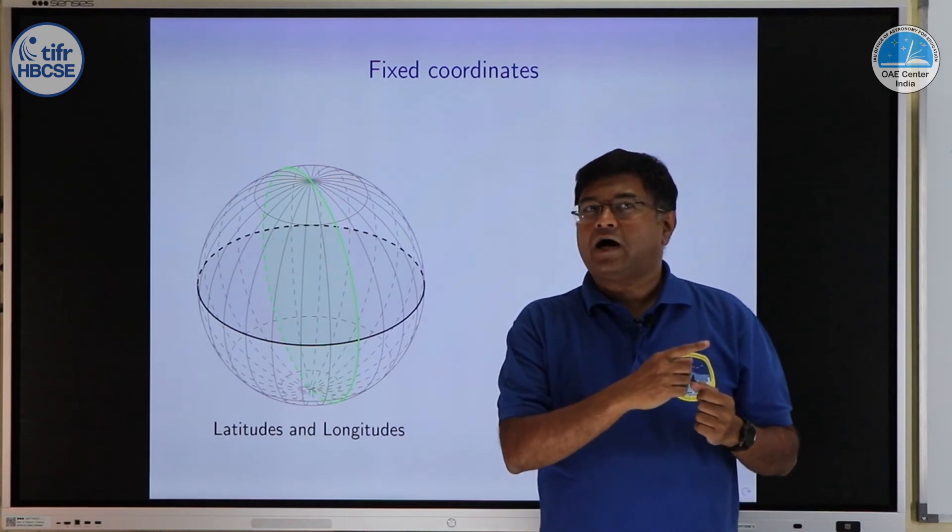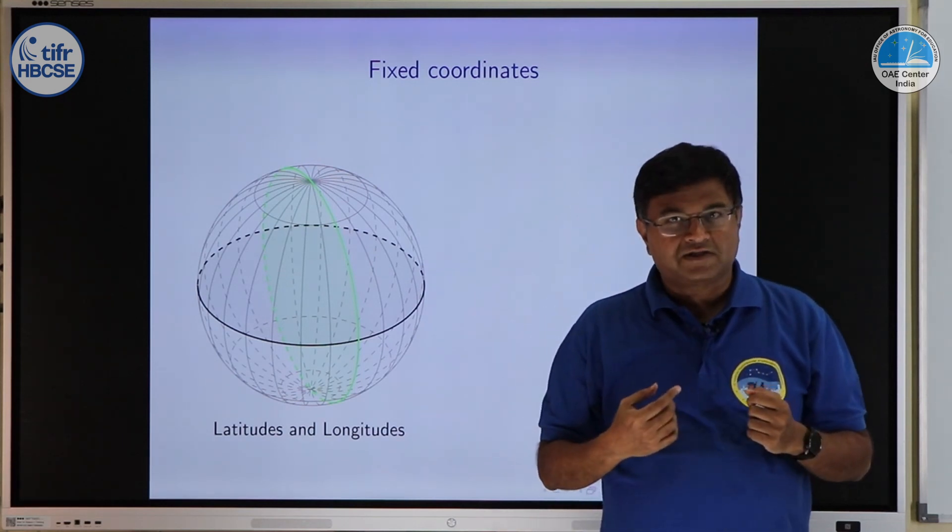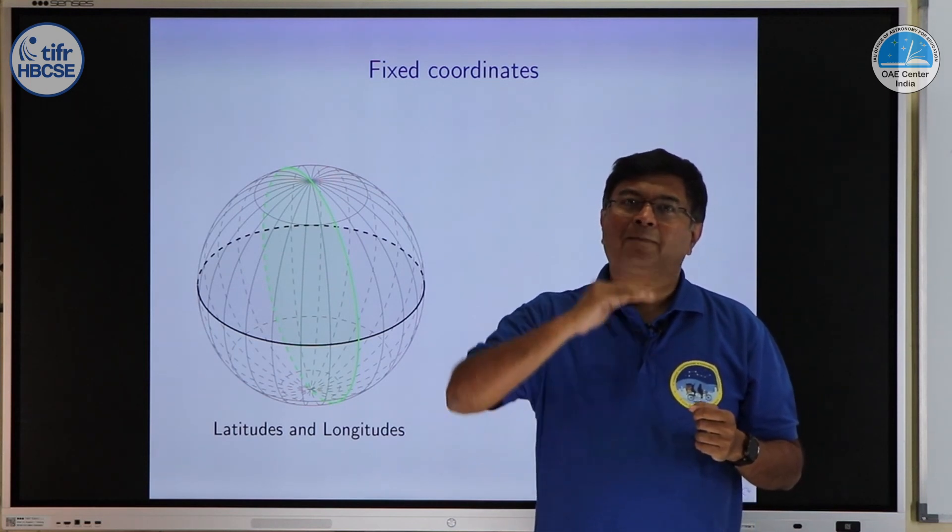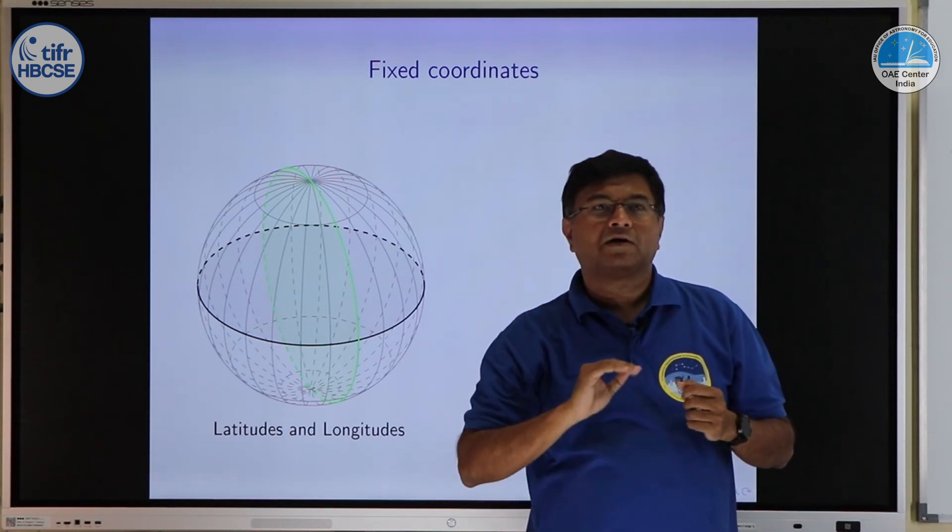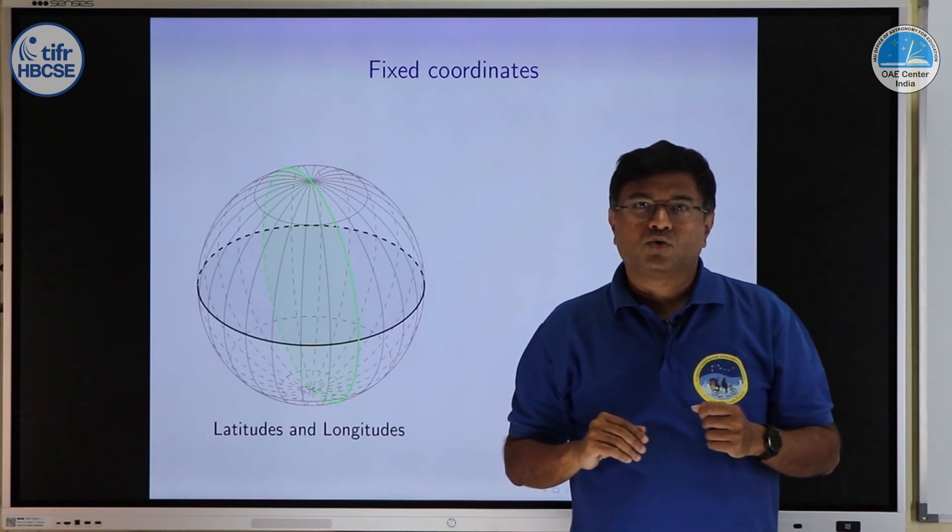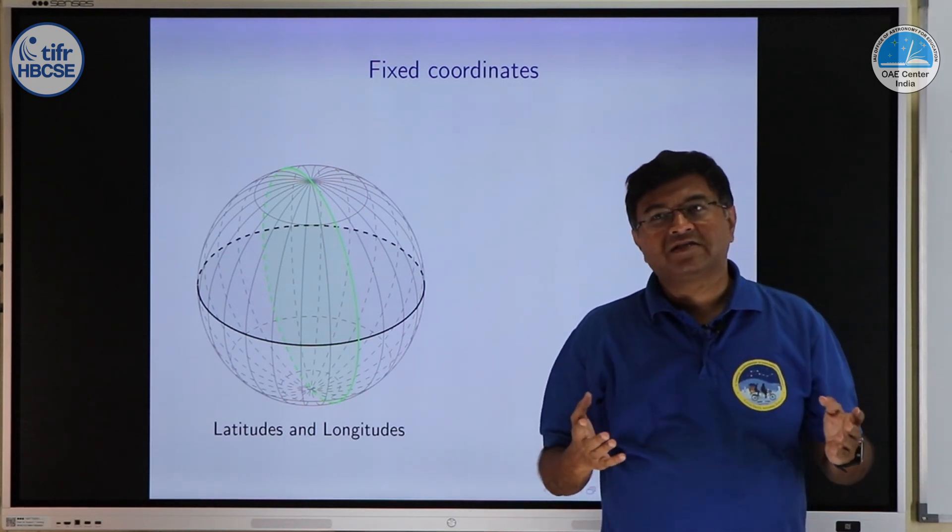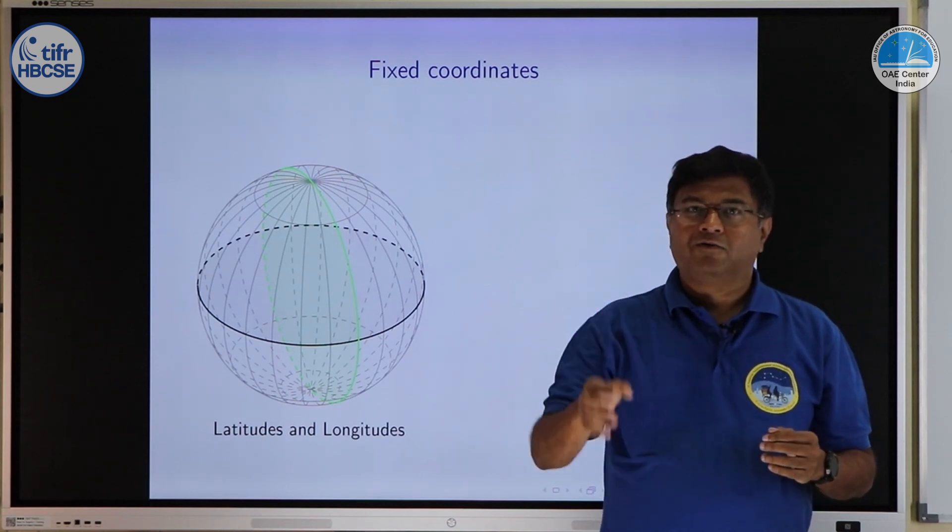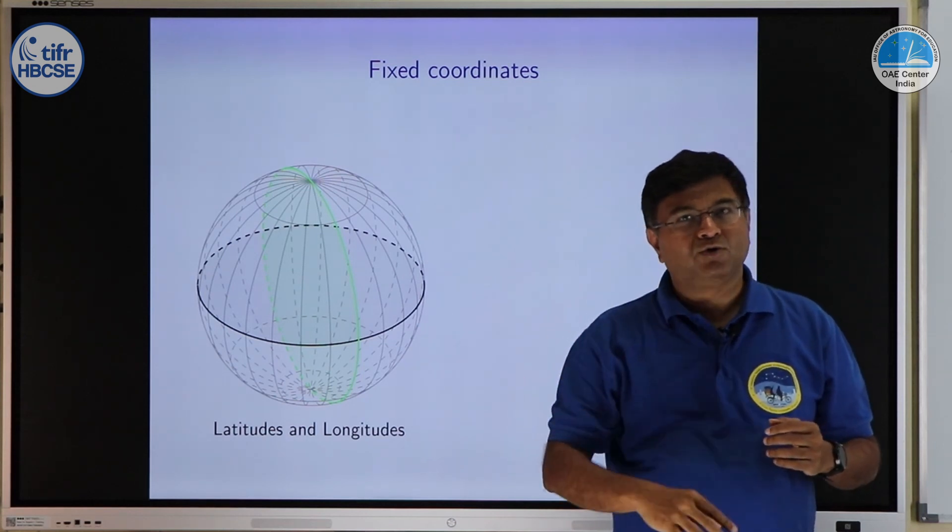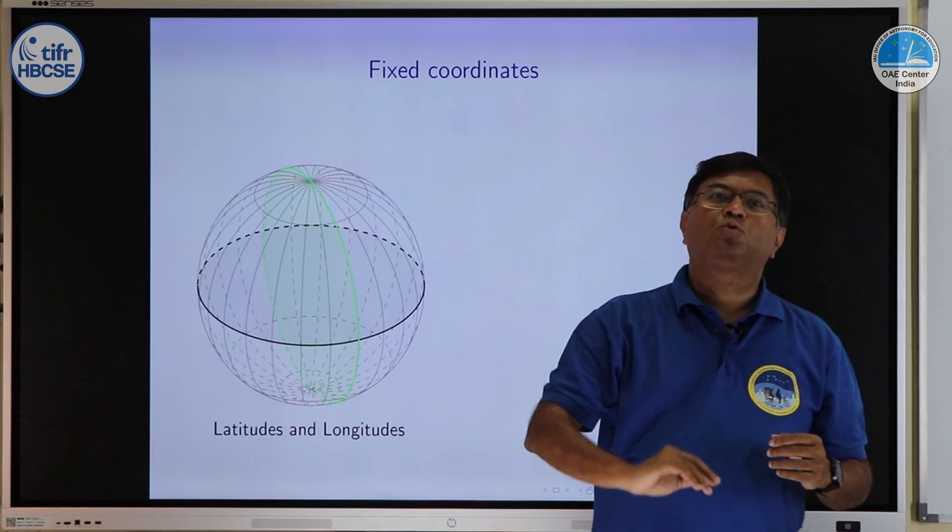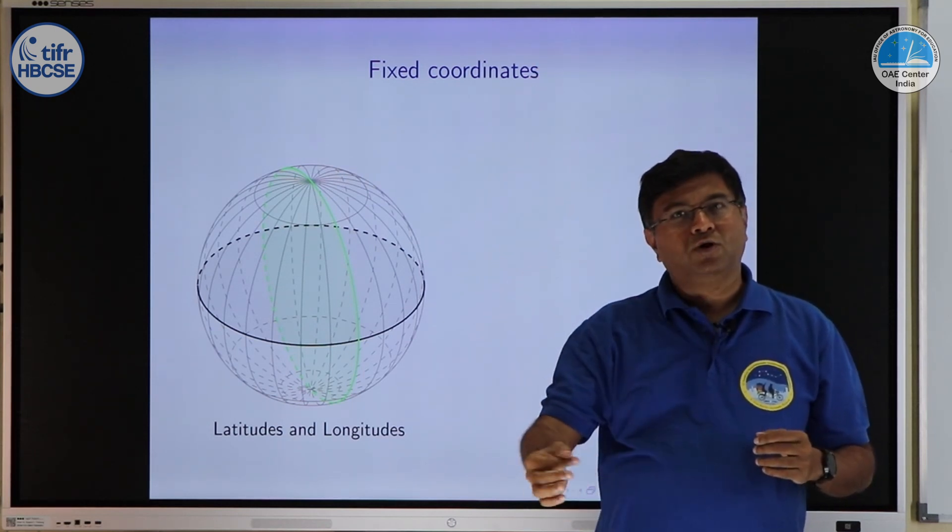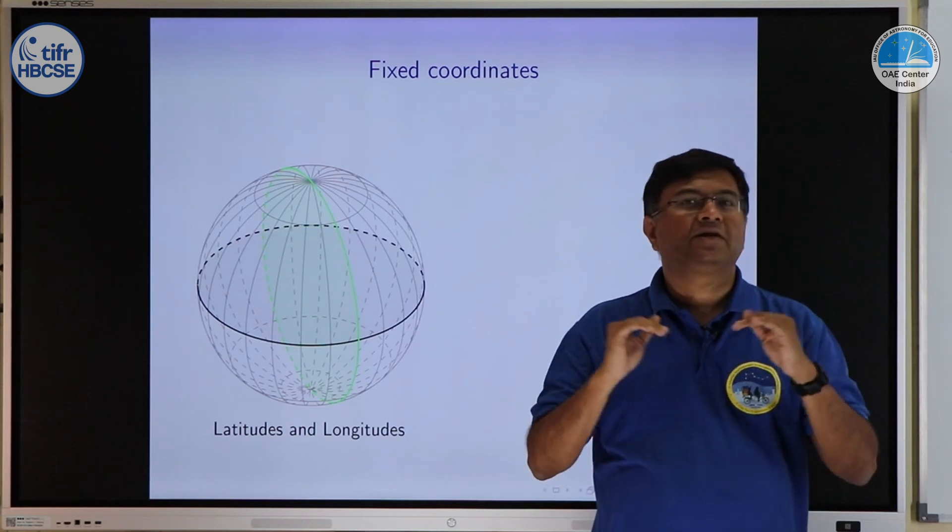For latitudes we take earth's equator as our reference and then we measure how many degrees above equator, how many degrees below equator a place is. If some place is 50 degrees north that means it is 50 degrees above equator. 40 degrees south means 40 degrees below equator. All the way up to north pole it will be 90 degrees north, south pole 90 degrees south and equator is 0 degrees.